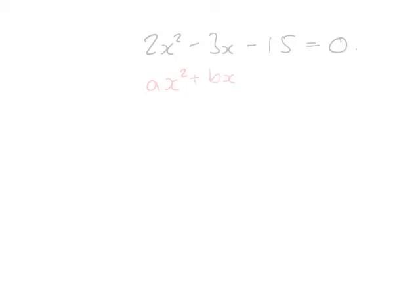First of all, we have to be able to remember what a, b and c are. They are the numbers associated with x squared, x, and just no x term at all, just the minus 15 thing at the end.